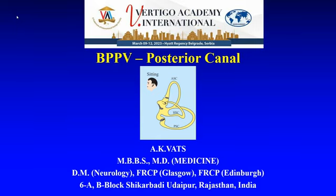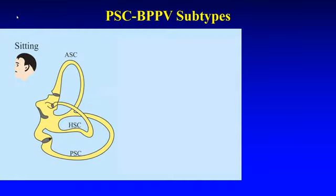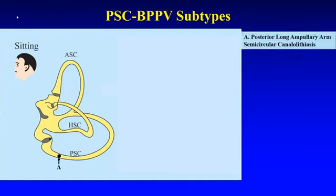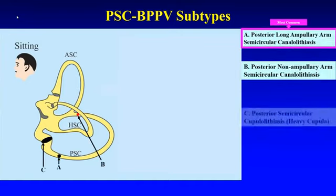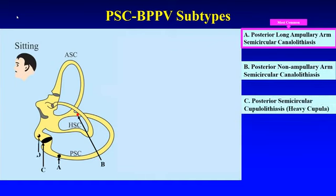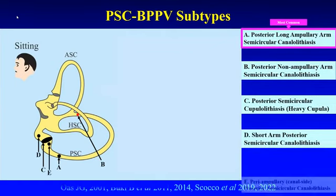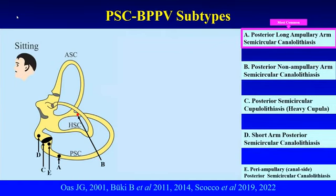BPPV of posterior semicircular canal. The five types we all know are very well defined. First is the posterior long ampullary arm semicircular canalolithiasis. Second is posterior non-ampullary arm semicircular canalolithiasis, with downbeat nystagmus during the Dix-Hallpike testing and also during the enhanced head hanging position.